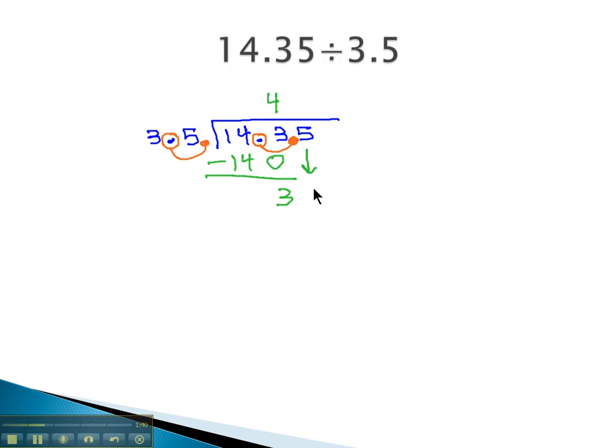Bring down the next digit, or the 5. 35 goes into 35 once, again making sure we line up the answer right above the number we're dividing into. 1 times 35 is 35, and when we subtract, we get 0.